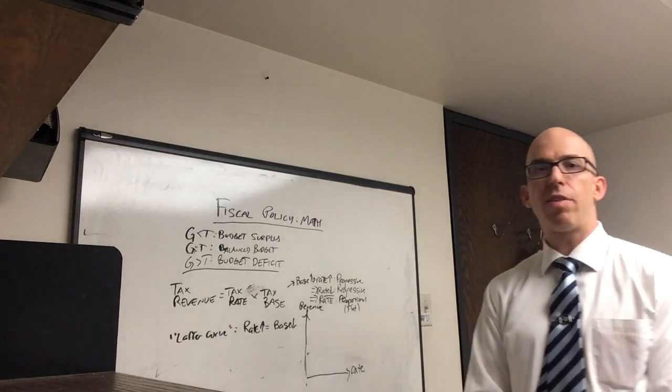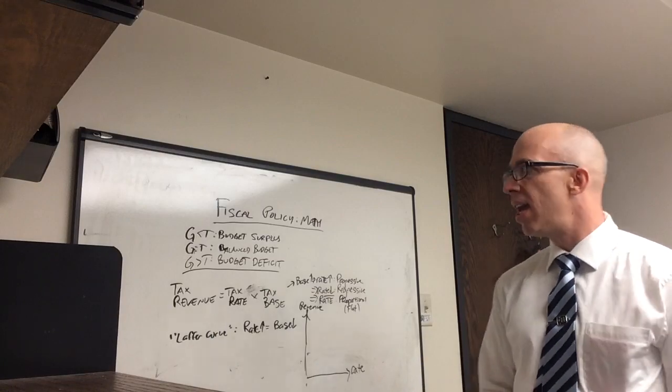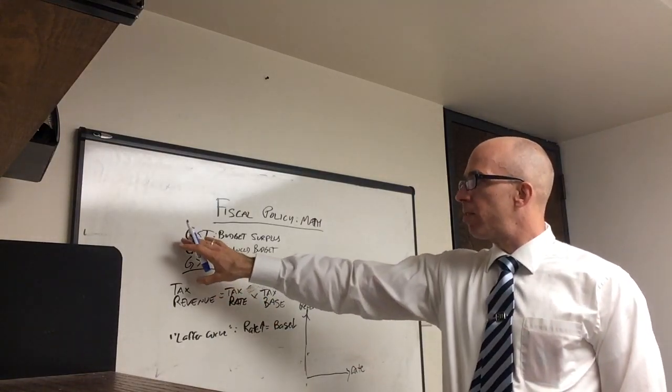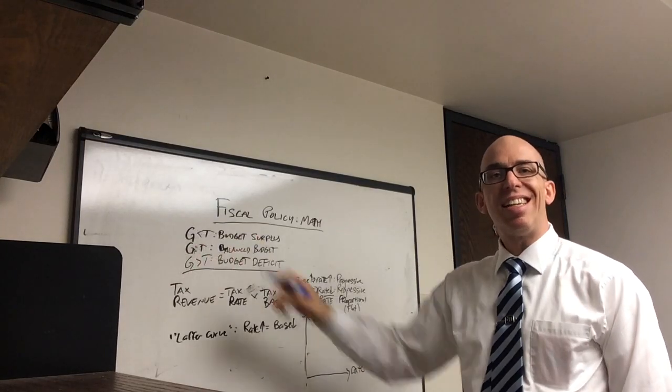So now I'm going to look at a little bit of math regarding fiscal policy, specifically taxation and revenue. What I'm going to talk about first is just a little bit of accounting. G is government spending and T is taxation.